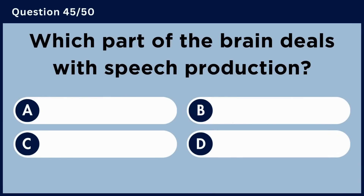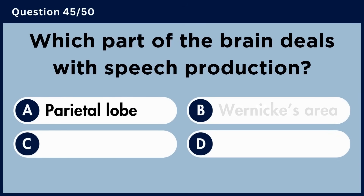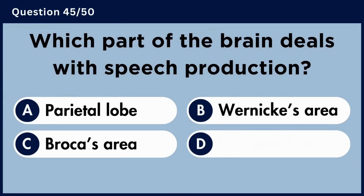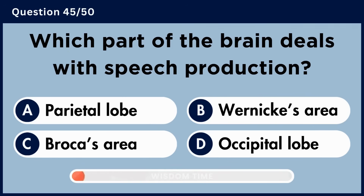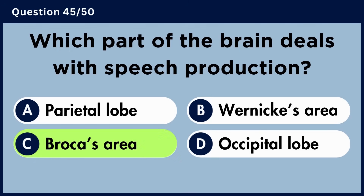Which part of the brain deals with speech production? Answer C: Broca's area.